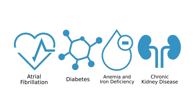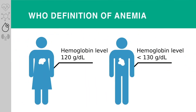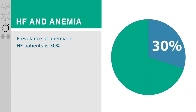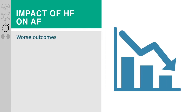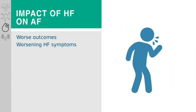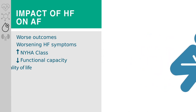Anemia is often defined according to age- and sex-specific values of hemoglobin or hematocrit. A European study suggests the prevalence of anemia in patients with heart failure is 30 percent. Even small reductions in hemoglobin levels are associated with worse outcomes, and even mild anemia is associated with worsening of symptoms, increased New York Heart Association class, and impairment in functional capacity and quality of life.